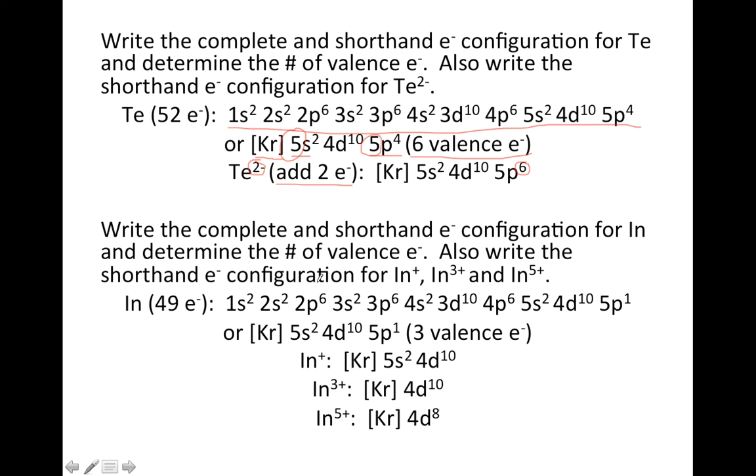Down below, we've got In neutral, and then we want to know what would In⁺, In³⁺, and In⁵⁺ be. So I wrote the long configuration for In, 49 electrons. It's also in the fifth row, so we're going to go up one and to the right. So Kr is the noble gas for this one as well. We're in the fifth row, so we start with 5s. If you have 36 in Kr, you're going to need 13 more. So if we start at 5s and add 13, we end up with 5p¹ at the end.